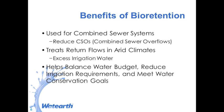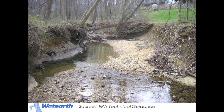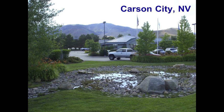Hydro modification is basically a process by which streams erode. As watersheds develop, the amount of runoff tends to increase substantially because of additional impervious cover and reduction in infiltration. We also see changes in timing and flow duration where watershed erosion processes are accelerated. Bioretention is one of many tools that can help with hydro modification management. Excess irrigation in western arid climates may also enter the bioretention system — basically be treated and infiltrated as opposed to running off.